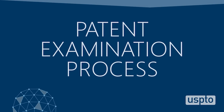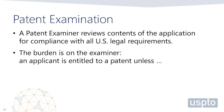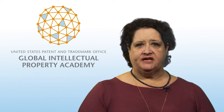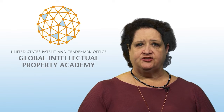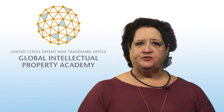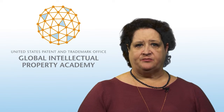Now let's look at how a patent application processes through the USPTO. Patent examination is a process by which a patent examiner reviews the contents of a patent application for compliance with US legal requirements. These are the requirements that we have talked about earlier in the presentation. After a thorough examination of the application, the patent examiner comes to a conclusion as to the invention's patentability and decides whether to grant or reject the patent application.